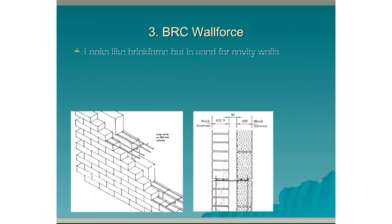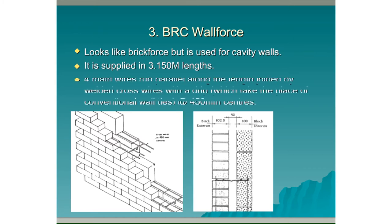Wall Force: It looks like Brick Force but is used for cavity walls. It is supplied in 3.15m lengths. Four wires run parallel along the length joined by welded cross wires with a drip, which takes the place of the conventional wall ties, and these are spaced at 450mm centres.